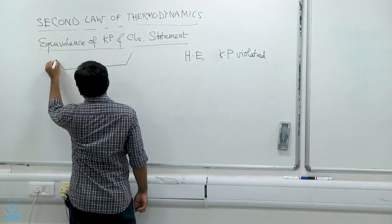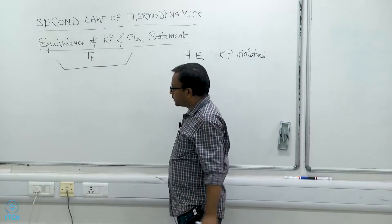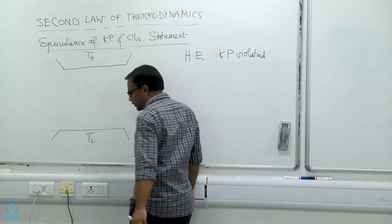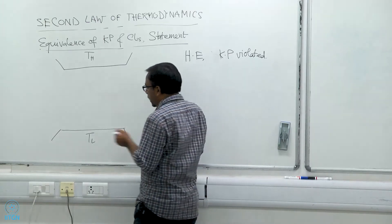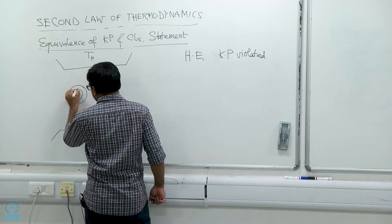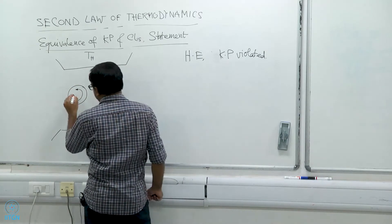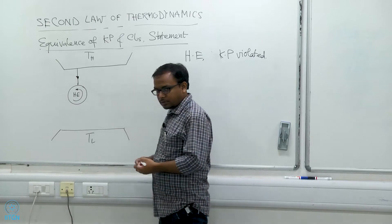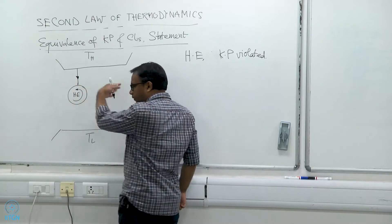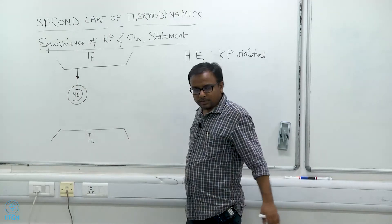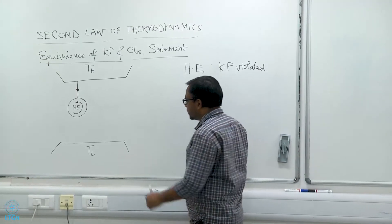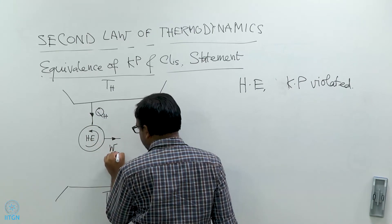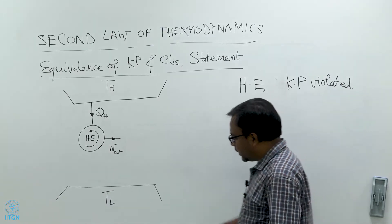Suppose you have a high temperature reservoir at temperature T_H and a low temperature reservoir at temperature T_L. Now suppose you have a heat engine that violates the Kelvin-Planck statement, meaning it can take in energy Q_H from the high temperature source and convert all of it to work W_out — that is, it is 100 percent efficient. So all of Q_H is being converted into work, and it is not rejecting any heat to the low temperature reservoir.